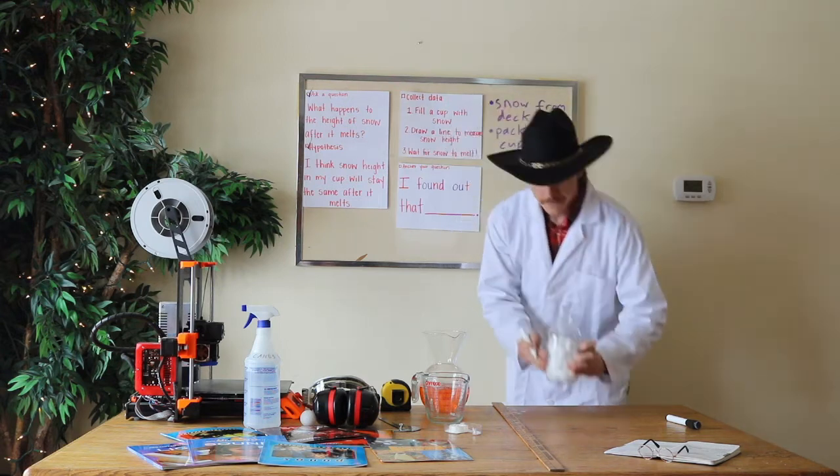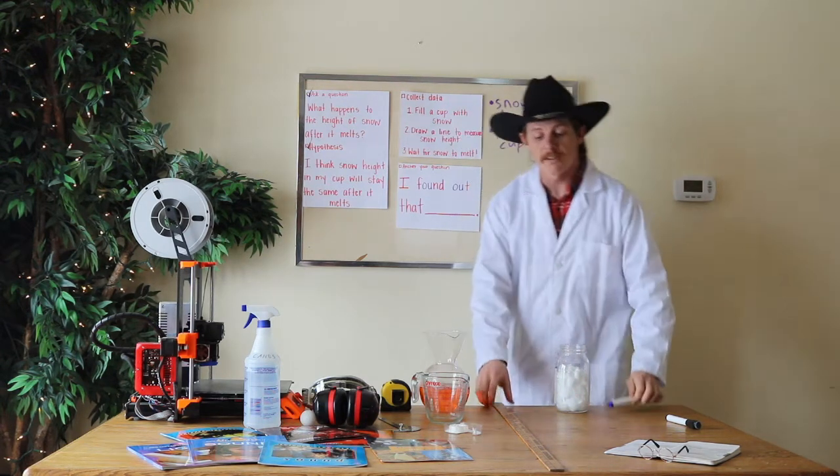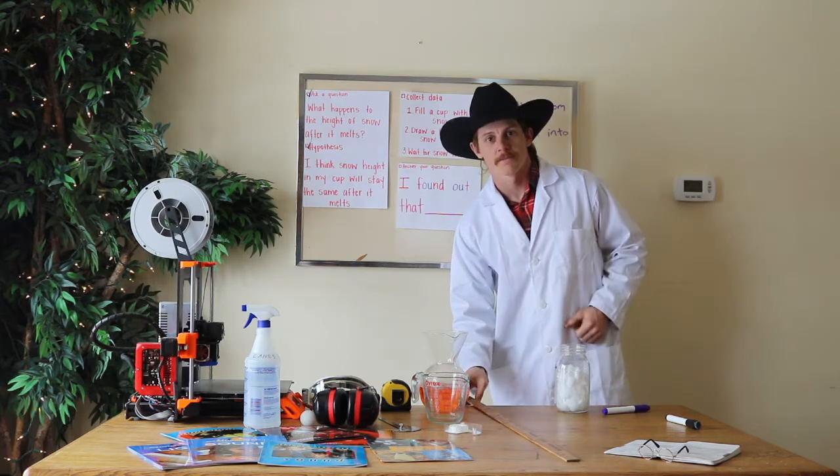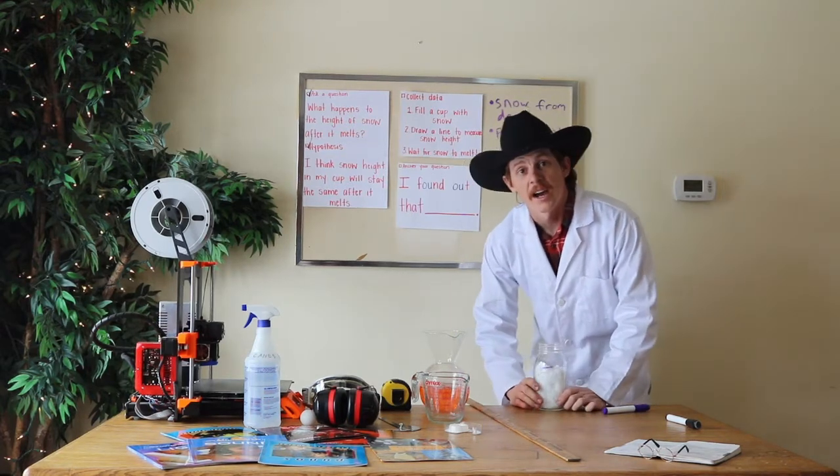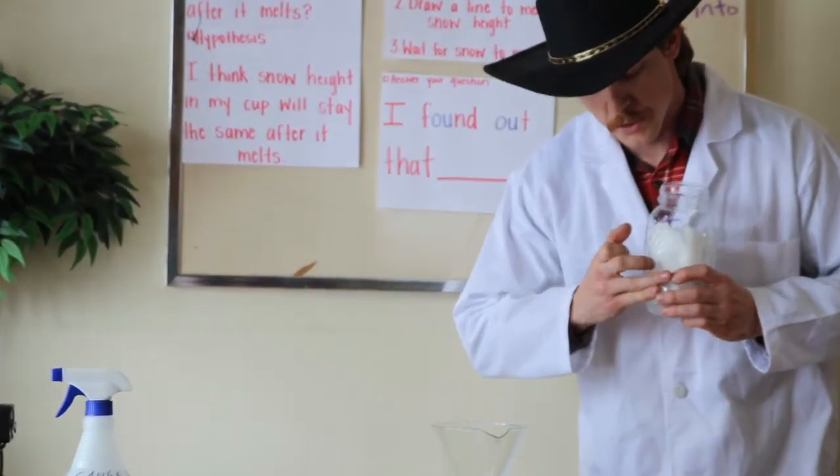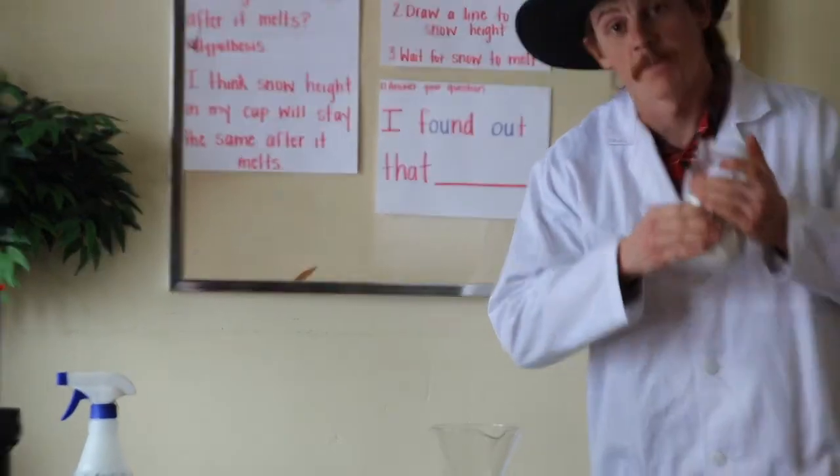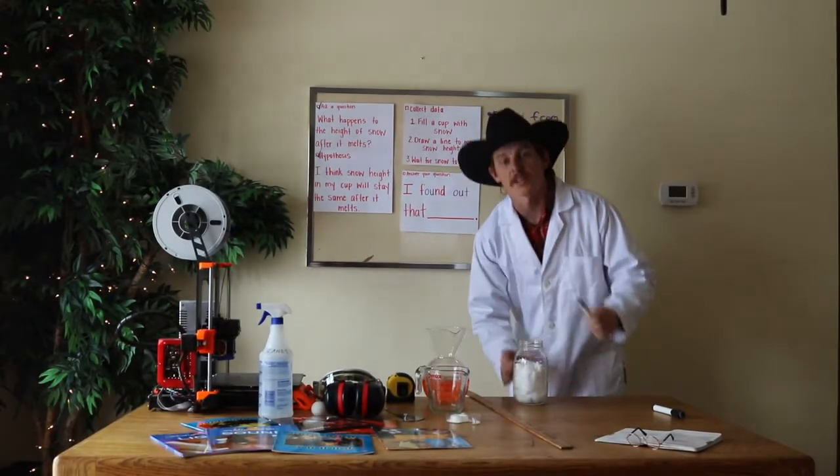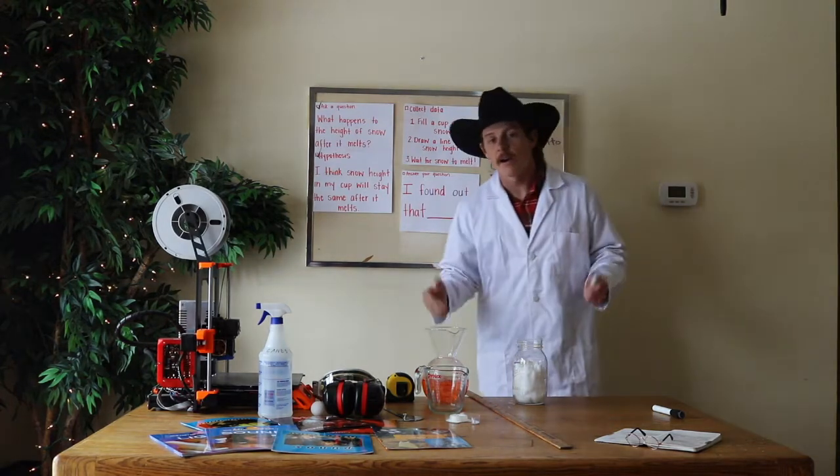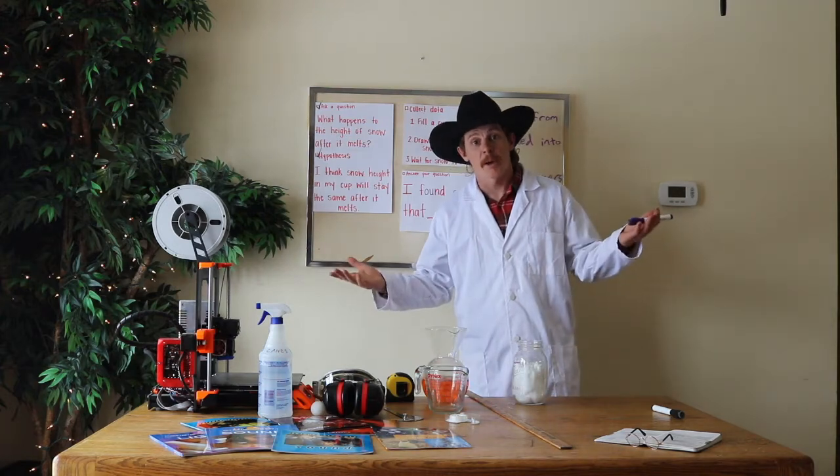We could also measure how high the snow is. I've got a ruler, but if you don't have a ruler at home you could just use your fingers. So I'm going to count how many fingers high the snow is. I got one, two, three, four, five, six, seven. So I've got seven fingers high. I'm going to write that down too. Now all we got to do is wait and see what happens and then compare our findings.